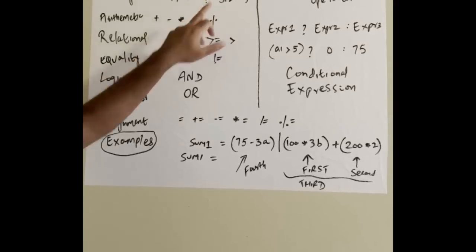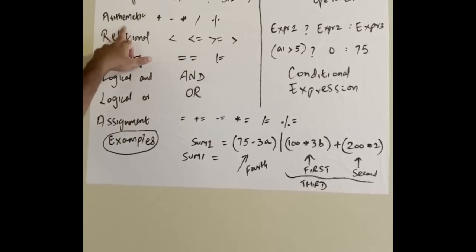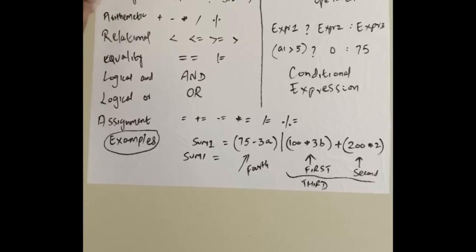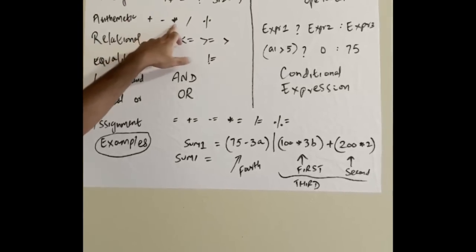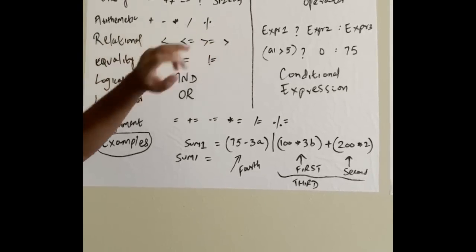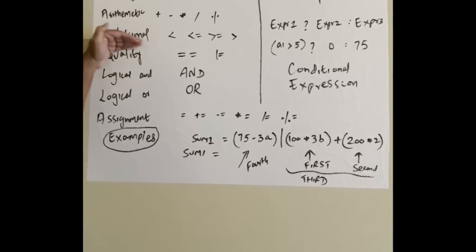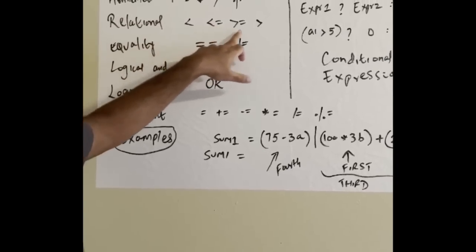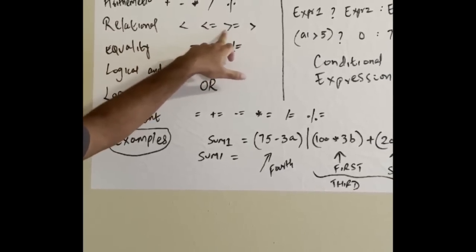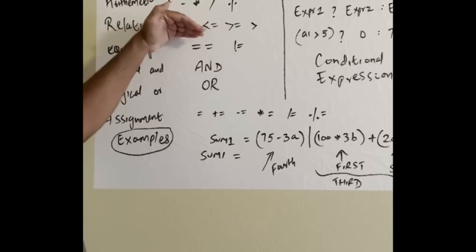Operator precedence: first are arithmetic operators - plus, minus, multiplication, division, and percentage. Second are relational operators - less than, less than or equal to, greater than, greater than or equal to. This is the third precedence order.